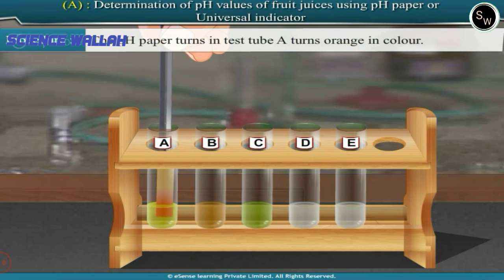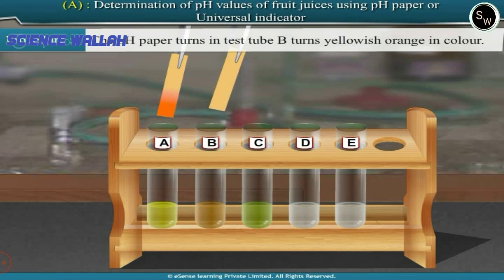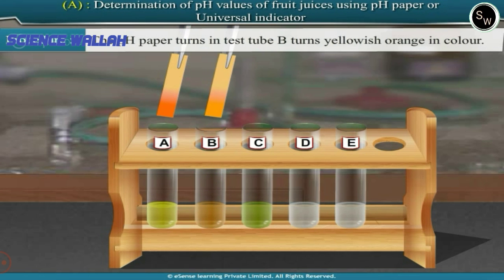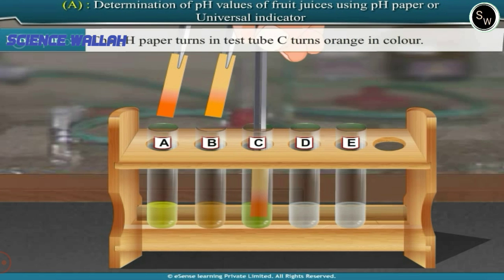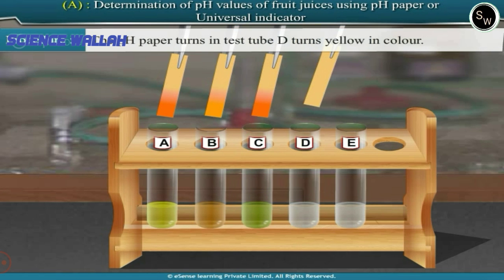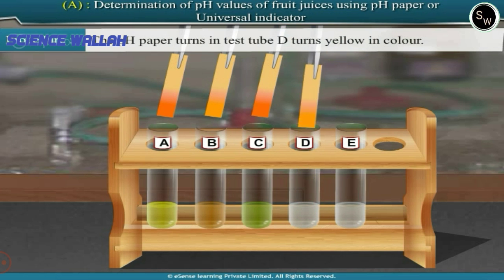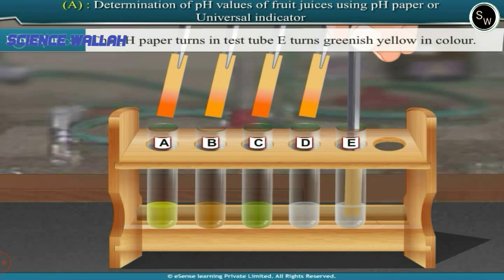What do you observe? The pH paper in test tube A turns orange in color. The pH paper in test tube B turns yellowish orange in color. The pH paper in test tube C turns orange in color. The pH paper in test tube D turns yellow in color. The pH paper in test tube E turns greenish yellow in color.